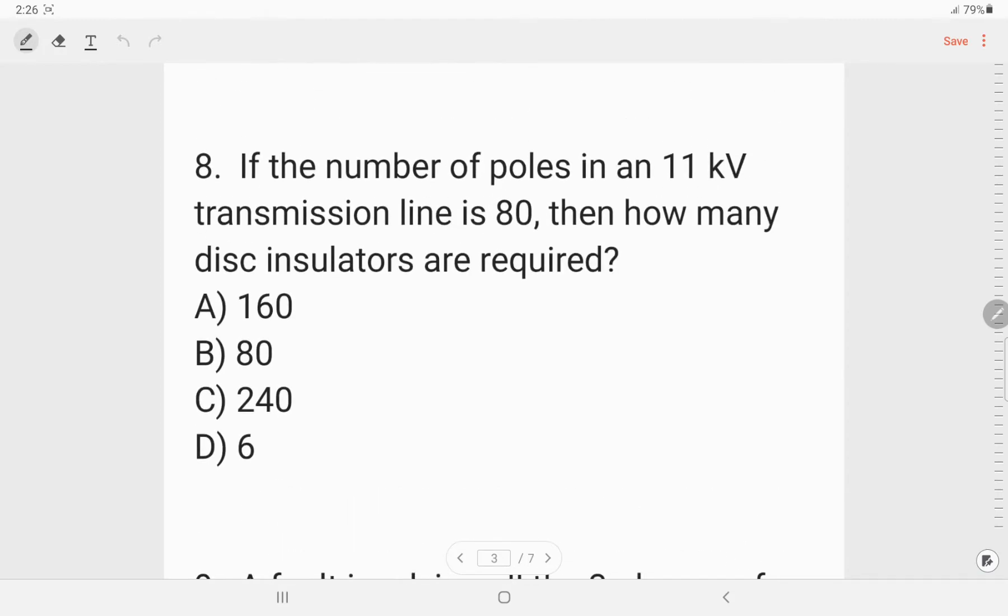Next, if the number of poles in an 11 kV transmission line is 80 then how many disc insulators are required? So the voltage in one disc insulator is 11 kV. Number of poles in an 11 kV transmission line is 80. So single phase it will be 80 insulators, and for three phase it will be 80 into 3 that is 240. Option C is the correct answer.